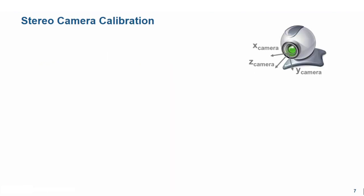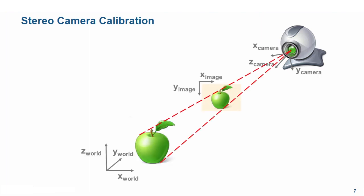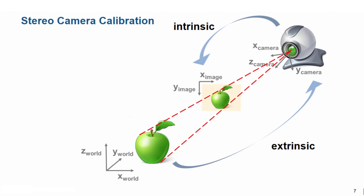Even for MonoVision cameras, the concept of camera calibration is an important one. An image is a 2D representation of a 3D real-world scene, and the mapping from world to image can be described mathematically by a series of transformations. The goal of camera calibration is to estimate the parameters for these transformations. The extrinsic parameters describe the location of the camera coordinate system within the world coordinate system, while the intrinsic parameters are required for the mapping from 3D camera coordinates to 2D image coordinates. For StereoVision cameras, accurate calibration becomes even more essential because we can then use it to recover depth from images.